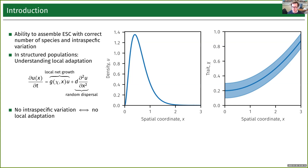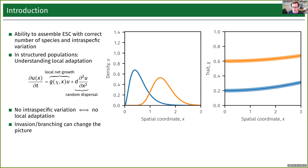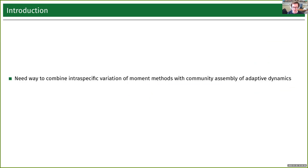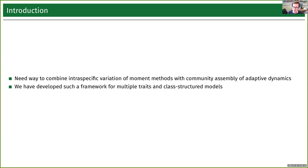If you're doing a moment-based approach and start with one species, it might turn out the community is invasible by some different species or there might be an evolutionary branching. The final community might have much less local adaptation and intraspecific variation in each species. We have adaptive dynamics, which can detect the split into two species but where you have no variation or local adaptation. On the other hand, moment-based methods have no good tools to detect this split. We need some way of combining these methods, and we have developed just such a way.